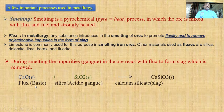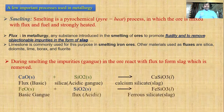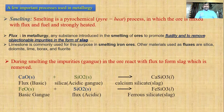For example, when impurities are acidic, calcium oxide is used as a basic flux, forming calcium silicate slag which floats on the molten ore and is easily removed. Conversely, when the gangue is basic, an acidic flux is used, forming ferric silicate or ferrous silicate slag which is removed from the surface of the molten ore.